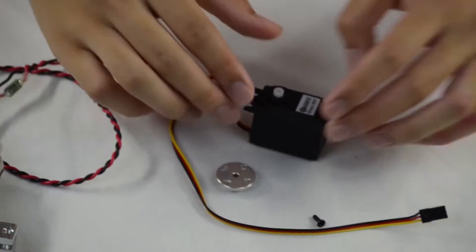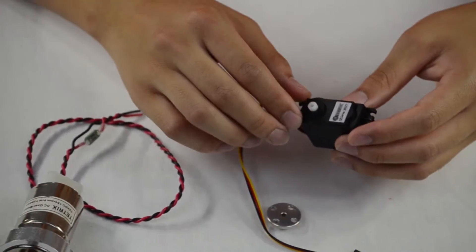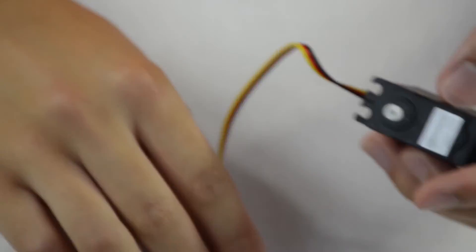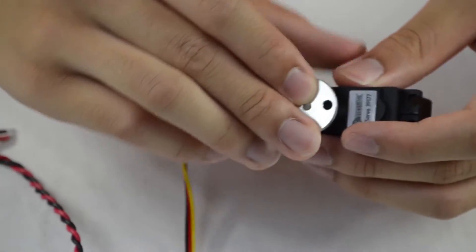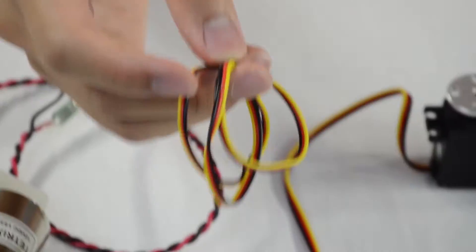So now you have your servos, which are much less powerful than your motor but are more precise in the fact that they can actually turn to a specific point and can then be attached to different beams and such with this adapter.